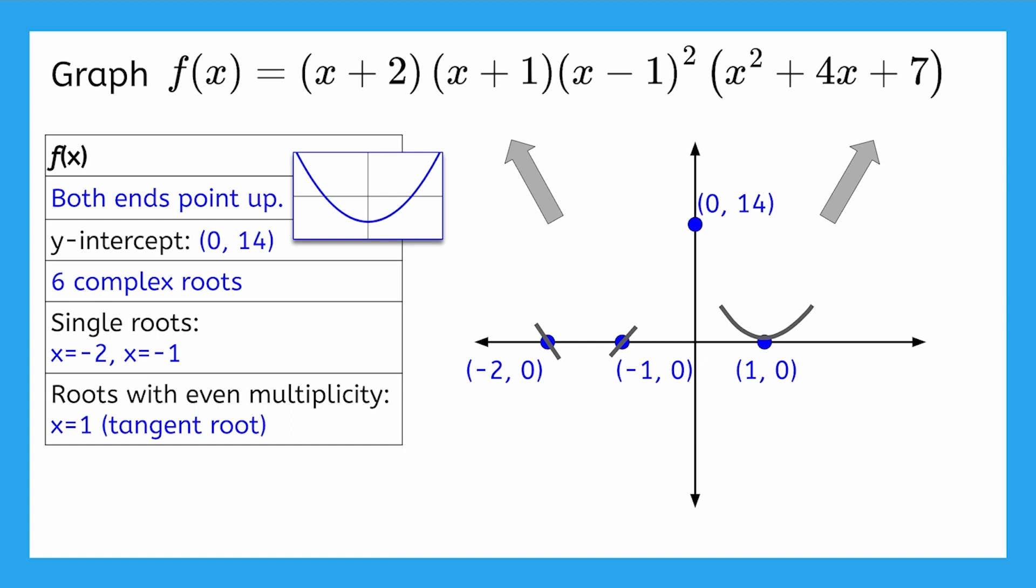And with that, we are ready for our final sketch. Follow the direction of the arrows, passing through negative 2, negative 1, and 14, drawing the curve tangent to the x-axis at 1, and increasing up to the right. Great work!